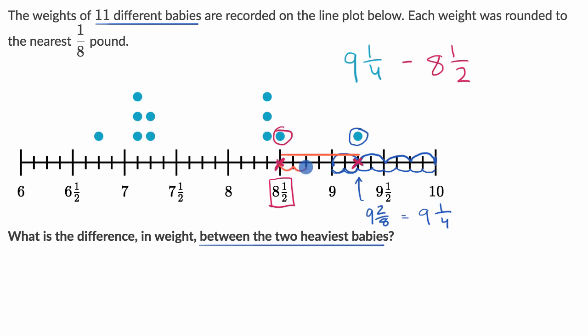The difference is this length right over here. And we could think about it in terms of eighths, because each of these hash marks is an eighth. So that's 6/8ths.